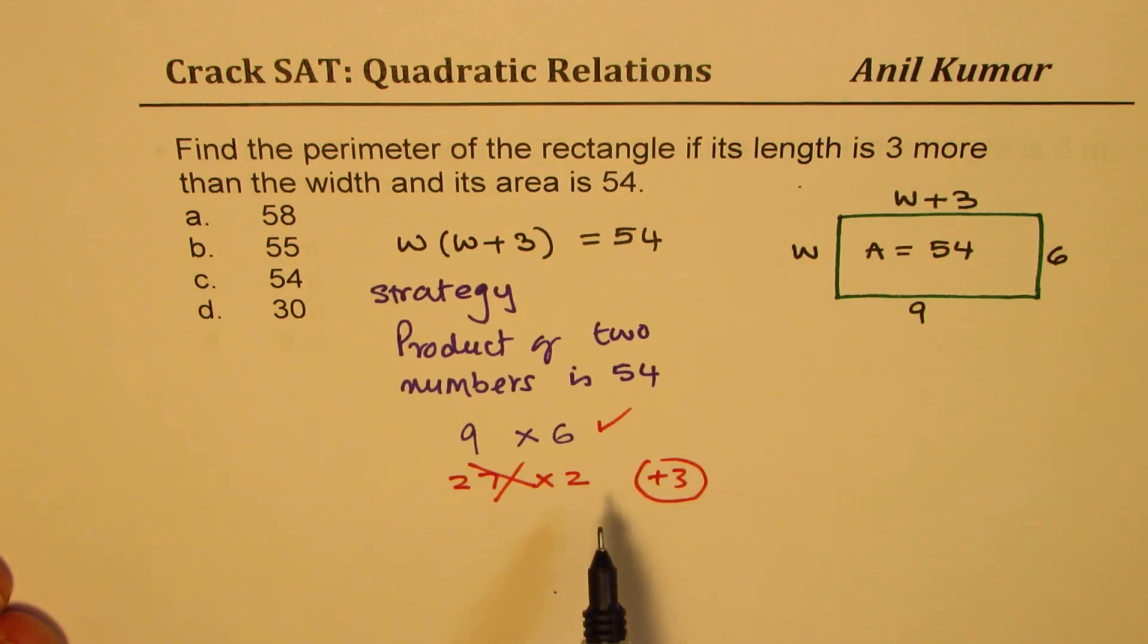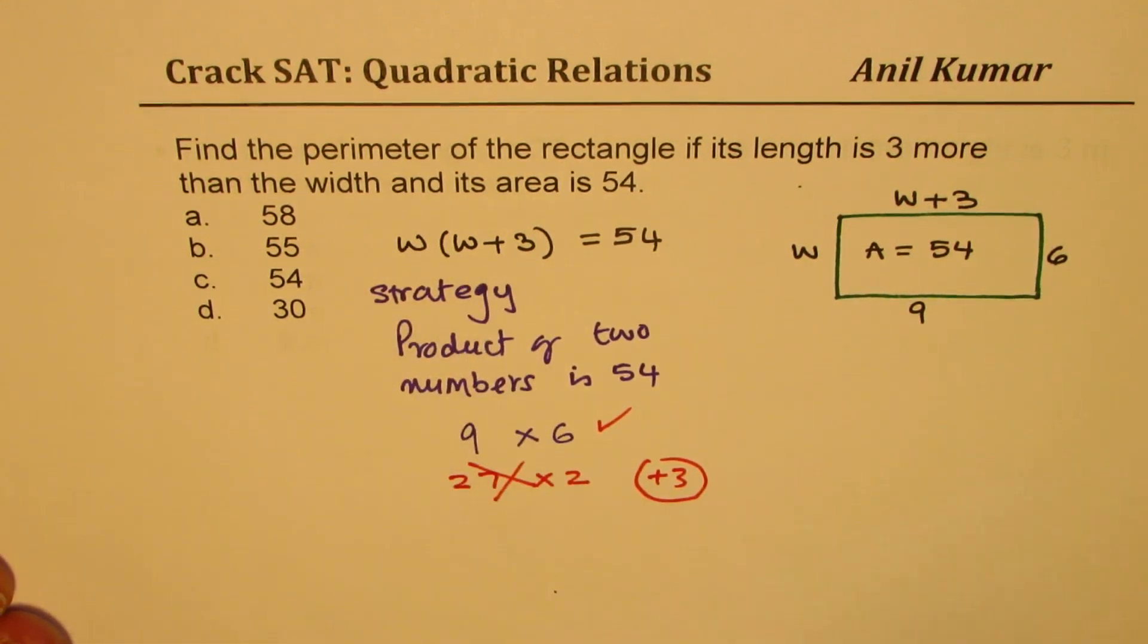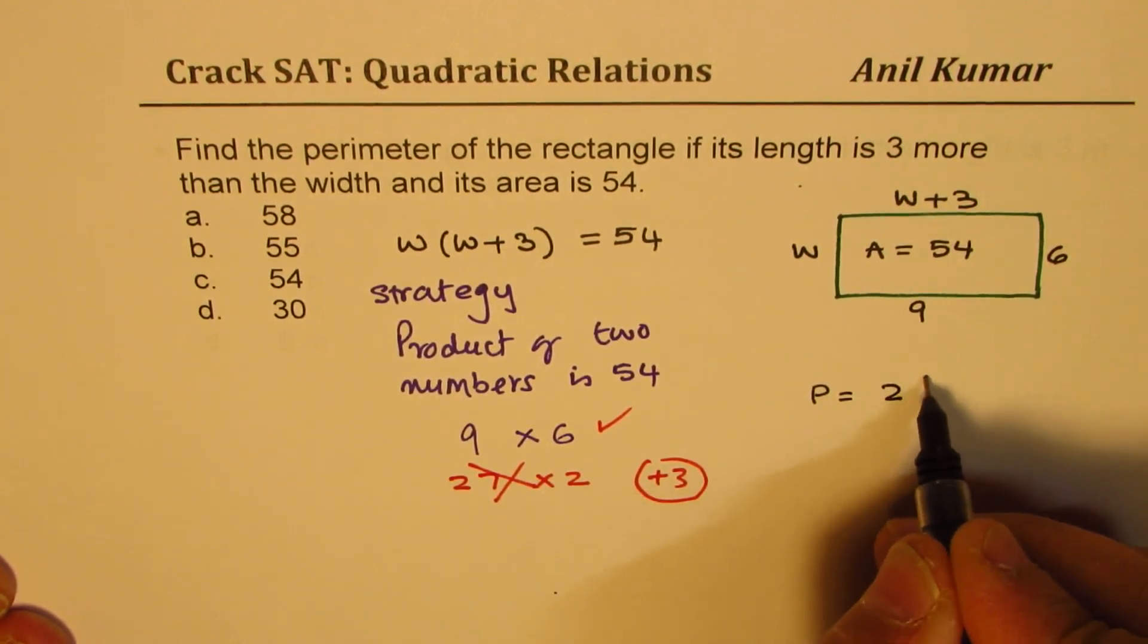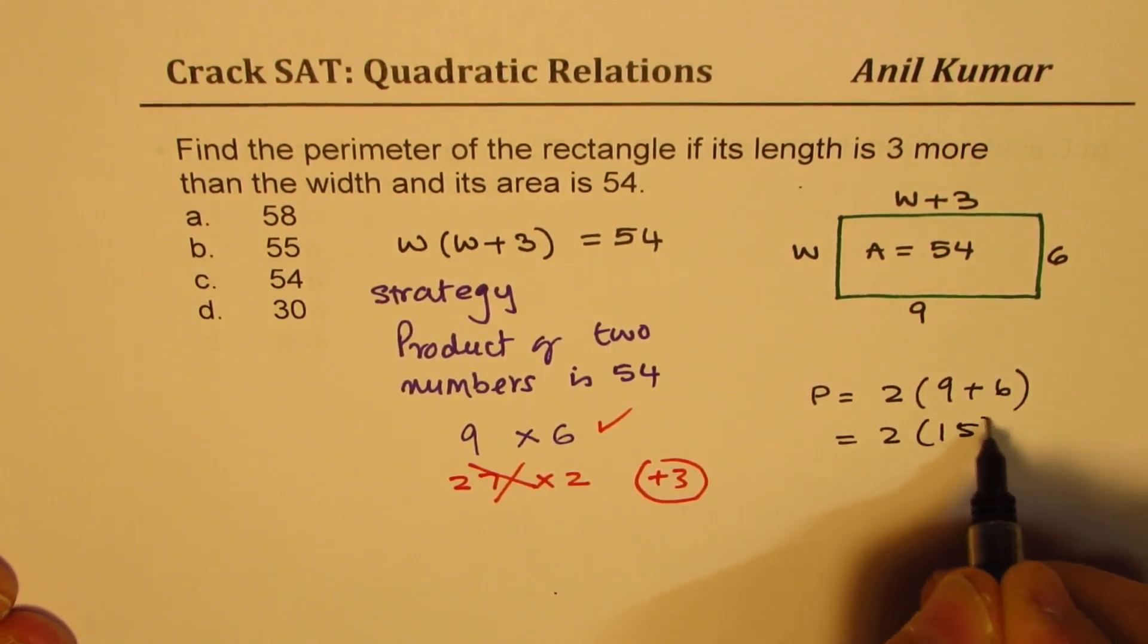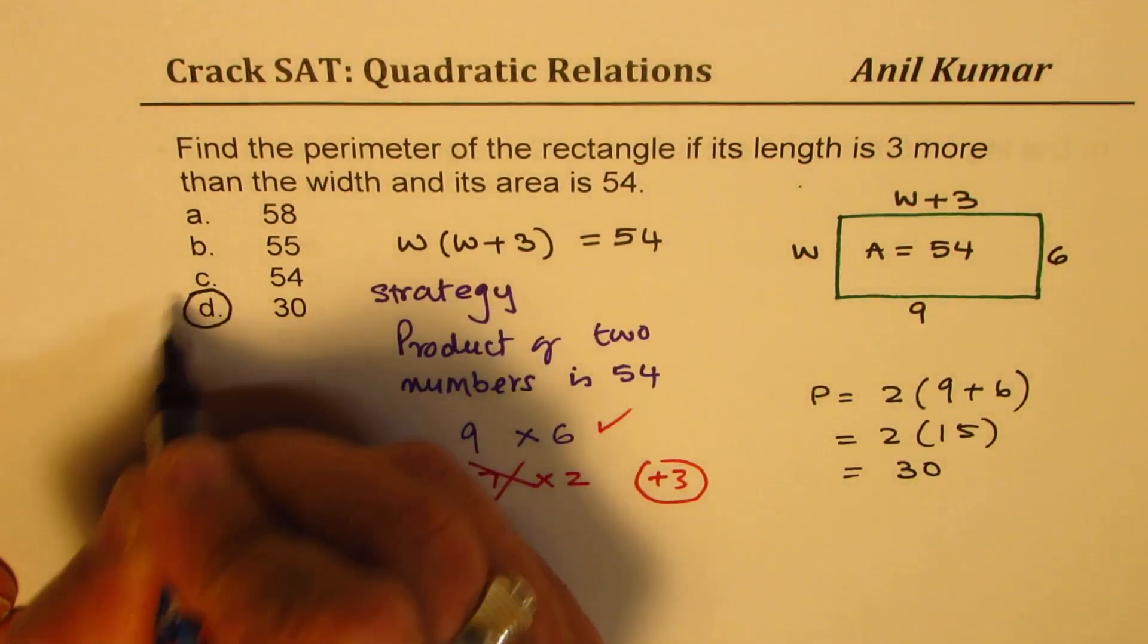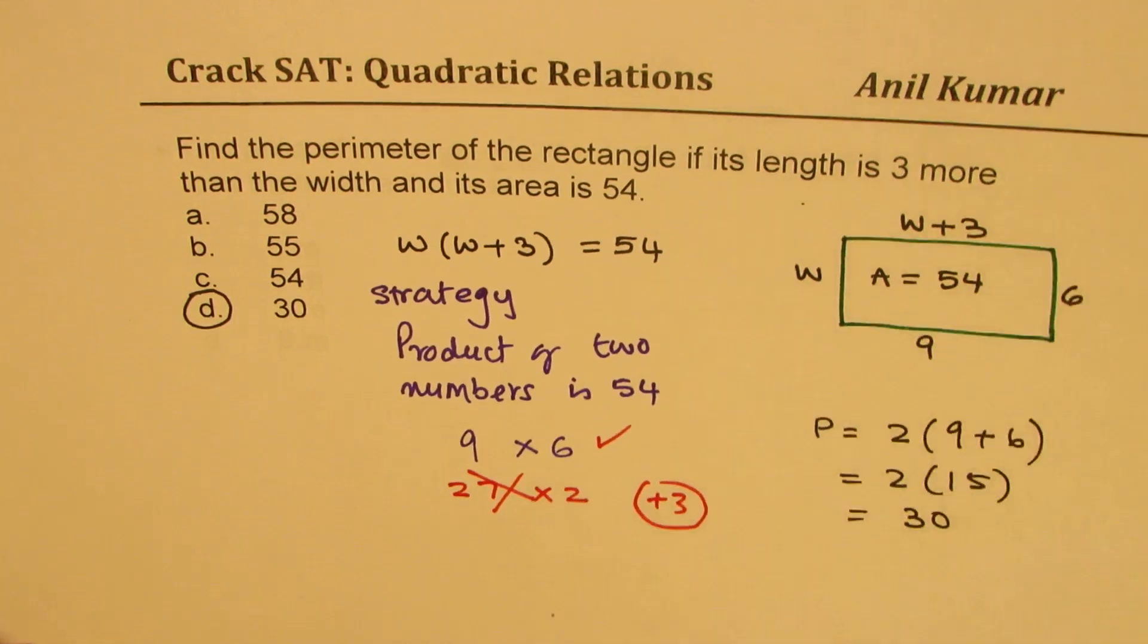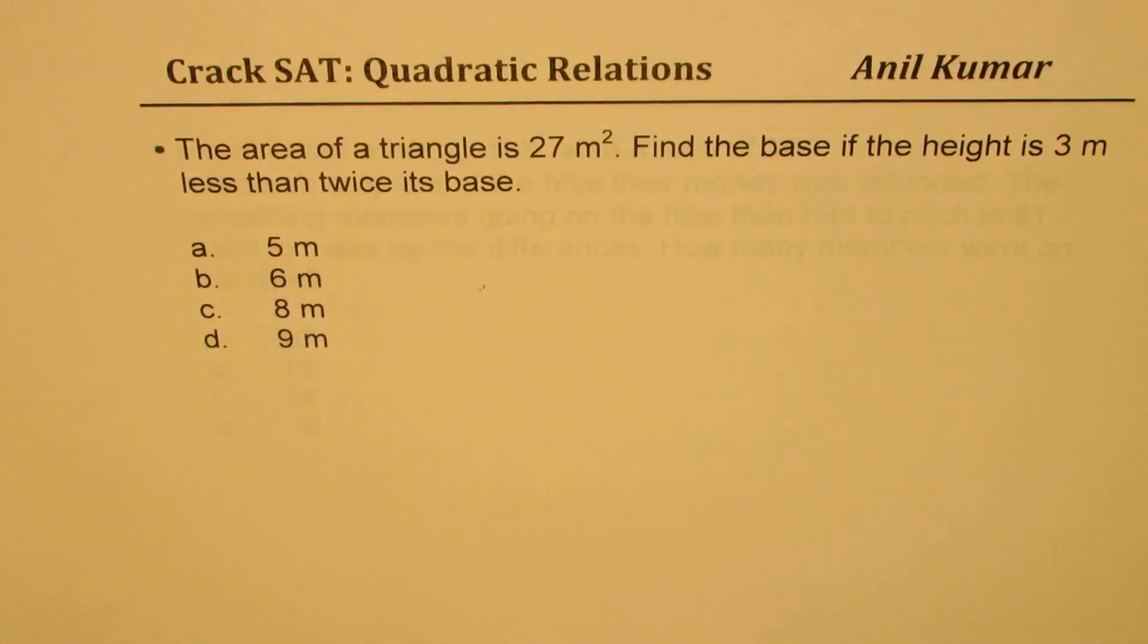So by trial and error you can actually get the solution much faster than by solving a quadratic equation. So once you know this, now you know what is the perimeter. Perimeter is twice 9 plus 6, which is 2 times 15, or 30. So the answer 30 is the right option. So that is the strategy which you could adopt in solving many quadratic relations multiple choice questions. Now let's look into another similar case.